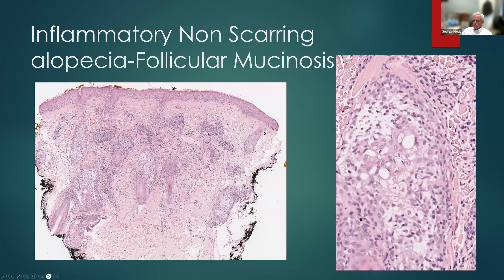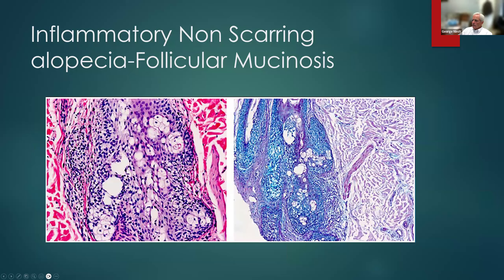Here's a case of follicular mucinosis. At low power, we see something that looks like spongiosis in the hair follicles — and at high power it still looks like spongiosis. But if we get a colloidal iron stain, we can see it's actually mucin, and therefore we call it alopecia mucinosa, or as a reaction pattern under the microscope, follicular mucinosis. I usually ask if the patient has a history or other stigmata of mycosis fungoides, since I would say more than half the cases we see are associated with that.